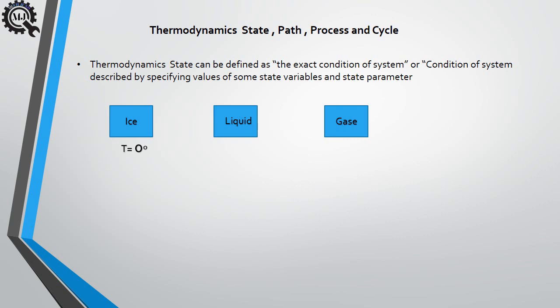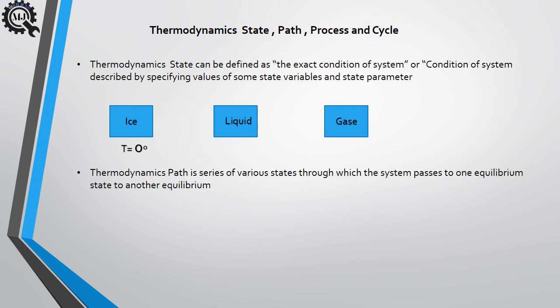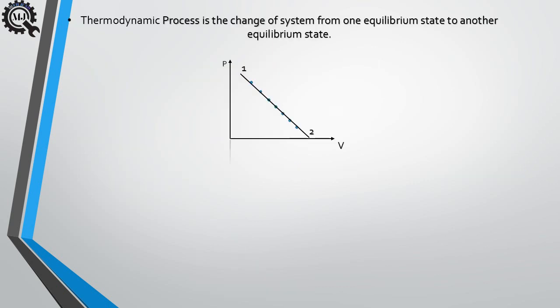Now let us see thermodynamic path. Thermodynamic path is a series of various states through which the system passes from one equilibrium state to another equilibrium state. When a system undergoes a change in state, the line joining those states with the help of a series of intermediate states is known as the path — the blue dots you can see are those intermediate states. Thermodynamic process is the change of a system from one equilibrium state to another; when the system undergoes from state one to state two through a series of equilibrium states, it is called a thermodynamic process.